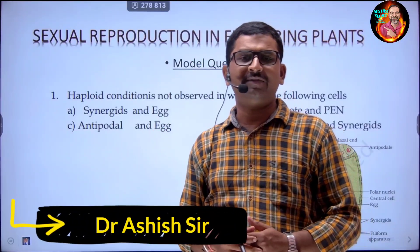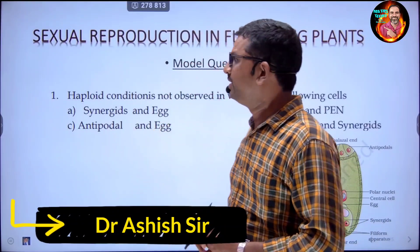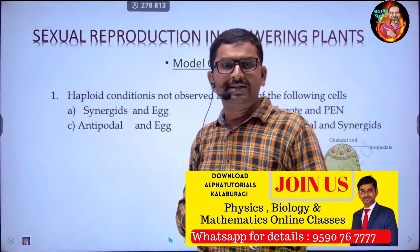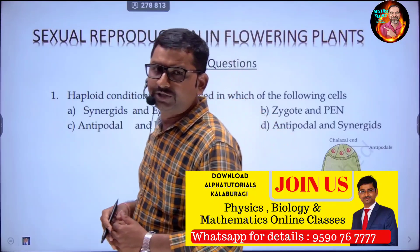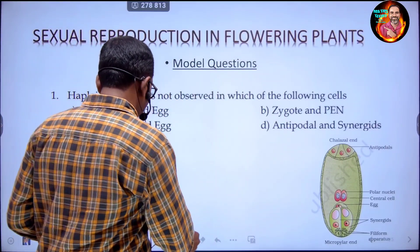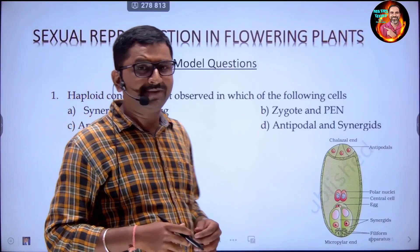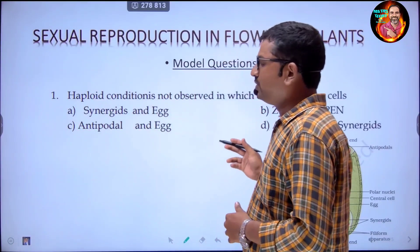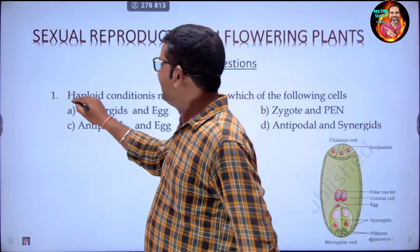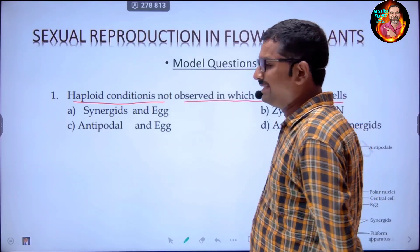Hello students and welcome to Alpha Tutorials online biology classes. The first question given in your multiple choice questions section of the model question paper is: 'Haploid condition is not observed in which of the following cells?'